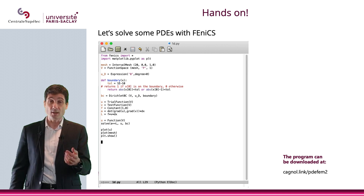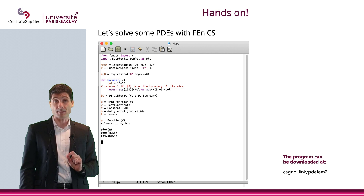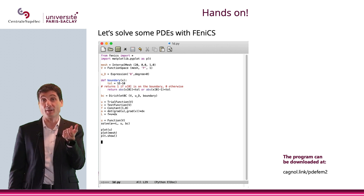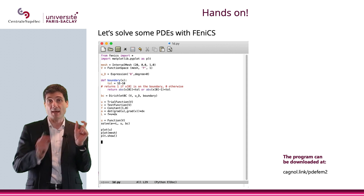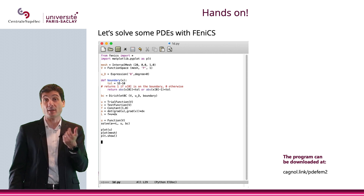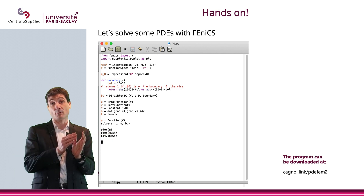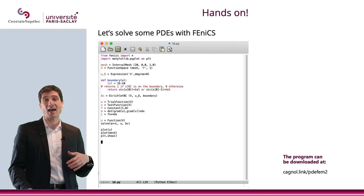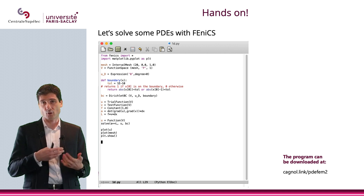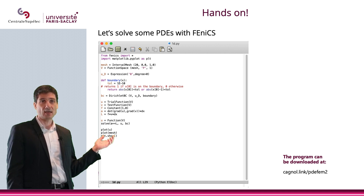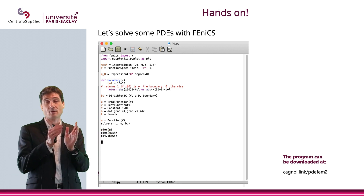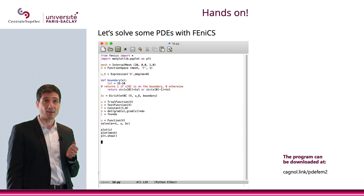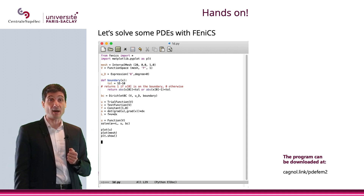Then I will define a function that will take a point and tell me if it is on the boundary. The variable is x, but it is x[0] because there is only one dimension. In dimension 2, it will be x[0] and x[1] for x and y. Here it's just x[0], and I check if x[0] equals 0 or x[0] equals 1. But since an equality between two real numbers is not a good way to do programming, it's much better to define a small tolerance and verify that |x[0]| or |x[0] - 1| is smaller than the tolerance. That is my boundary function that tells me if I am on the boundary or not.